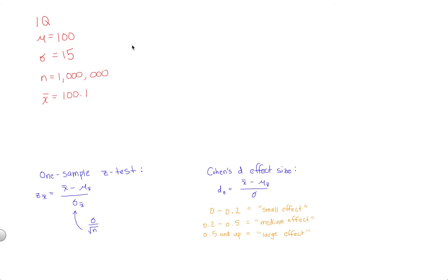Let's actually do the one-sample Z test here. So in this case, we're going to have Z sub X bar equals 100.1 minus 100, sample mean minus population parameter, divided by 15, the standard deviation, over the square root of your sample size. So over the square root of 1 million.